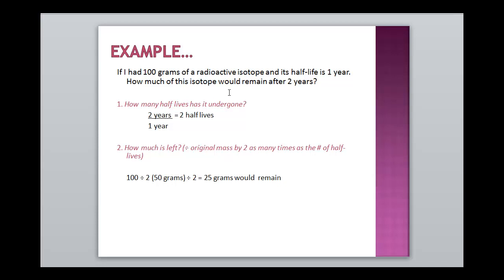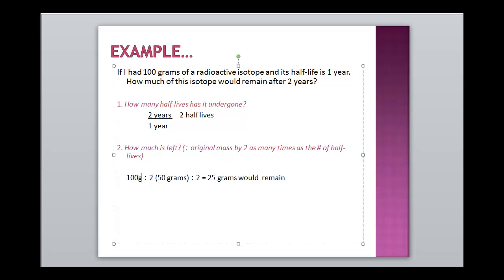If I had 100 grams of radioactive isotope and its half-life was one year, how much of the isotope would remain after two years? First, how many half-lives has it undergone? Two years divided by one year — the half-life of this example — gives us two half-lives. So how much of the original 100 grams is left? We divide the original mass by two as many times as the number of half-lives. So, 100 grams divided by two equals 50 grams, and then 50 grams divided by two gives us 25 grams. We would have 25 grams left over because we went through two half-lives.